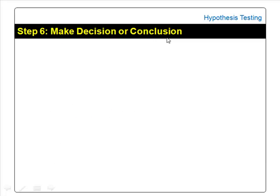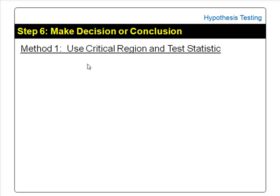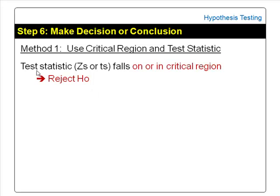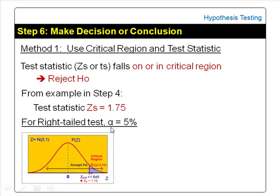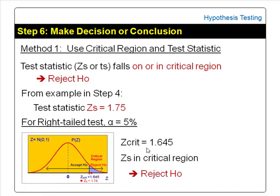In step 6, we learn to make a decision or conclusion about the test — whether to accept or reject the null hypothesis. There are two methods. Method 1 uses the critical region and test statistic: if the test statistic falls on or inside the critical region, we reject the null hypothesis; otherwise, we accept it. Using the example from step 4, the test statistic zs is 1.75. For a right-tailed test with alpha equal to 5%, the critical value z-critical is 1.645. Since zs = 1.75 falls inside the critical region, the conclusion is: reject the null hypothesis.